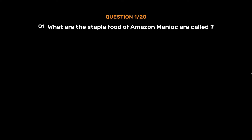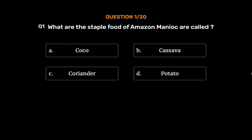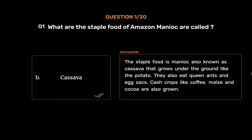Question number 1. What are the staple food of Amazon — Manioc — are called? Option A: Cocoa. Option B: Cassava. Option C: Coriander. Option D: Potato. The correct answer is Option B, Cassava. The staple food is Manioc, also known as cassava, that grows under the ground like the potato. They also eat queen ants and egg sacks. Cash crops like coffee, maize and cocoa are also grown.